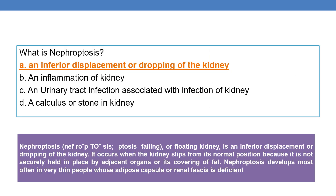Next question: what is nephroptosis? Nephroptosis is an inferior displacement or drooping of the kidney, also called a floating kidney. It occurs when the kidney slips from its normal position because it is not securely held in place by adjacent organs or its covering of fat. Nephroptosis develops most often in very thin people whose adipose capsule or renal fascia is deficient.